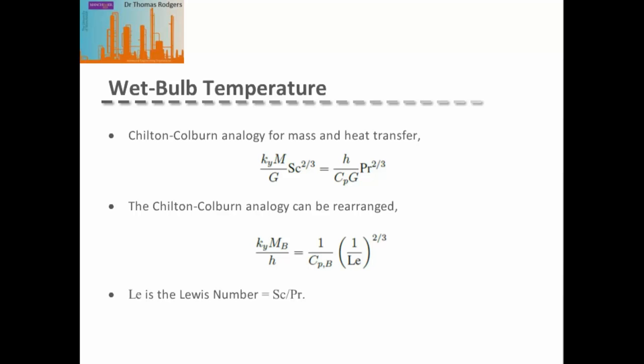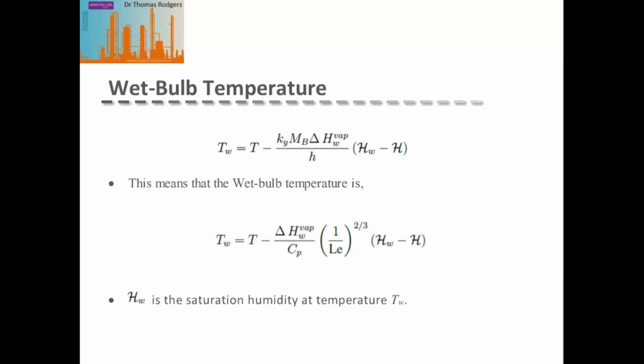The Lewis number is the ratio of the Schmidt number to the Prandtl number and can be looked up for a wide variety of systems. Substituting this expression into the wet bulb temperature relation gives the wet bulb temperature in terms of the convective gas temperature, the enthalpy of vaporization, the specific heat capacity, the Lewis number, and the difference between the saturation humidity at the wet bulb temperature and the humidity of the convective gas.